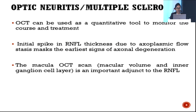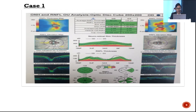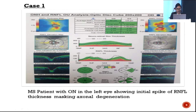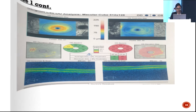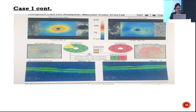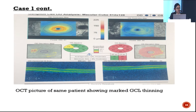Macular OCT scan is very important, as it provides ganglion cell layer values that quantify what is actually happening in the disease — whether axons are dying — in addition to RNFL thickness. For example, in a left eye where average RNFL thickness is 125 micrometers (above normal range, as seen in initial-phase MS optic neuritis), the macular cube showed ganglion cell layer thinning, confirming axonal loss. Both RNFL and ganglion cell layer thickness are important in MS with optic neuritis.